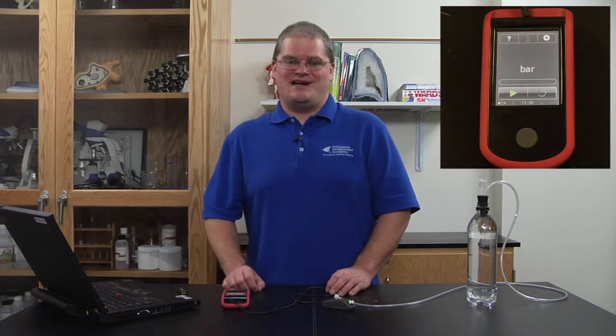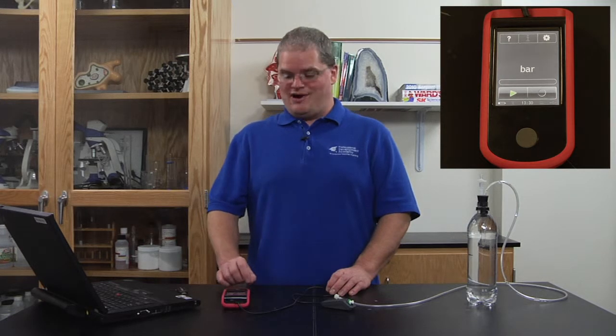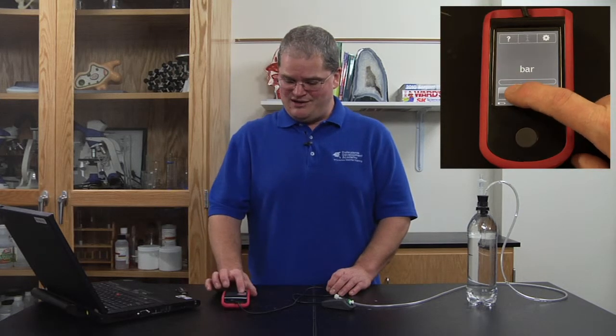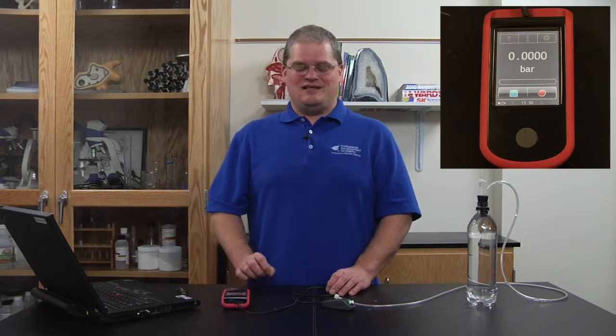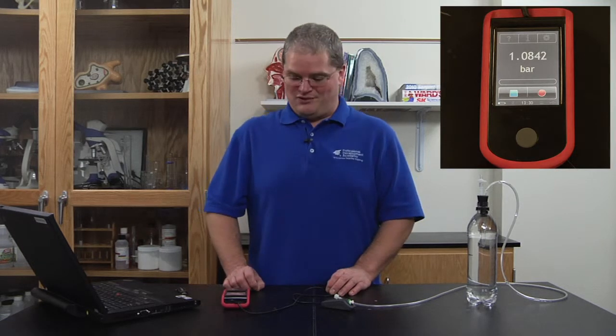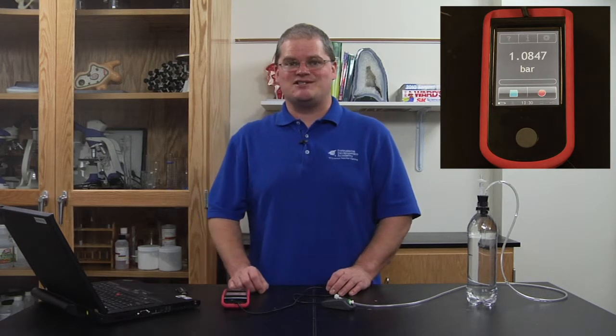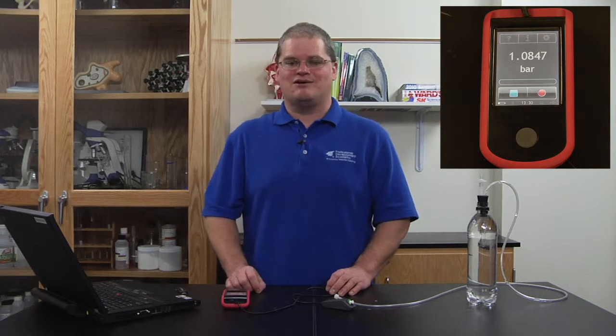In order to begin measuring data, you want to push the green button on the home screen and you'll immediately begin to measure the gas pressure of the room. Currently you can see the gas pressure in the room is 1.08 bars.